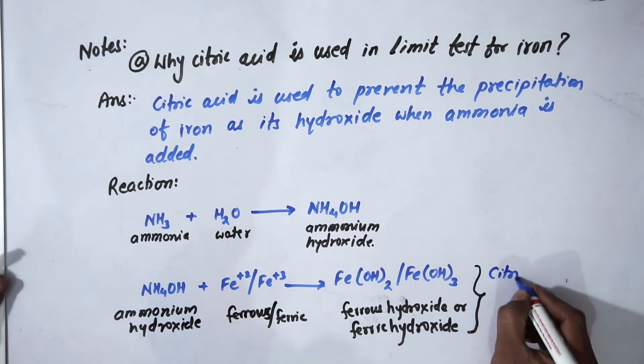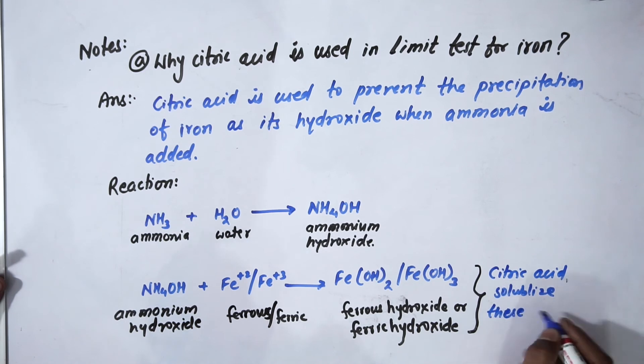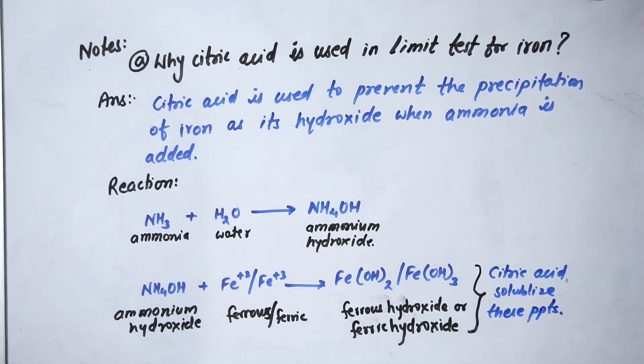will be solubilized by citric acid. Hence, total iron present in the sample will be available to react with thioglycolic acid and give the exact pink-purple color. That is why citric acid is used in limit test for iron.